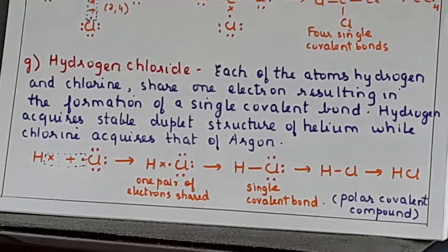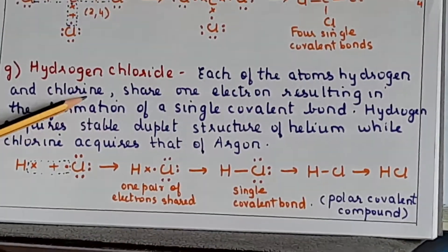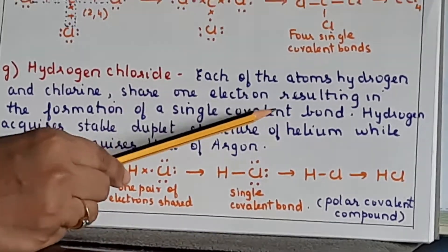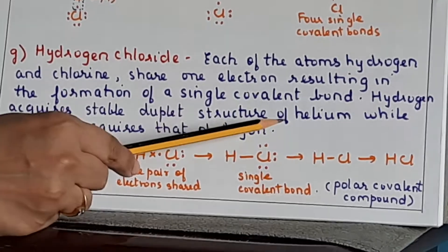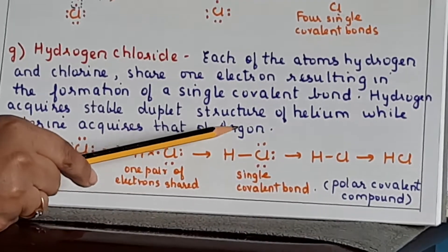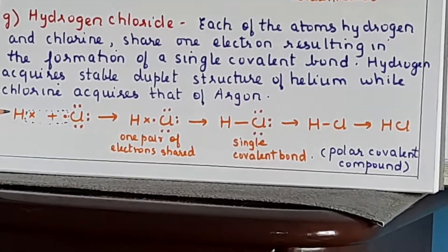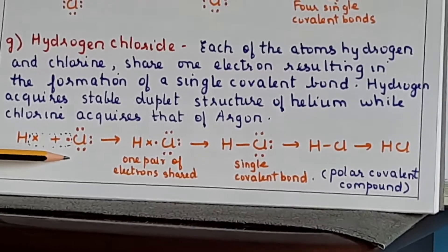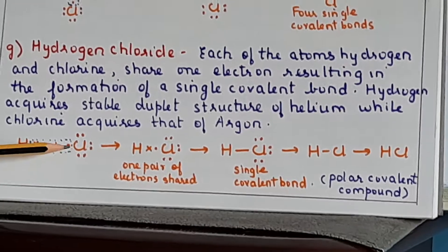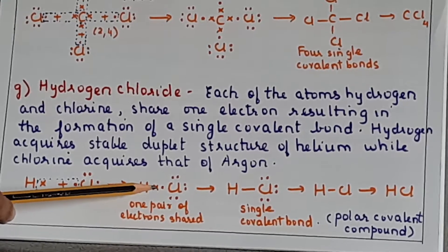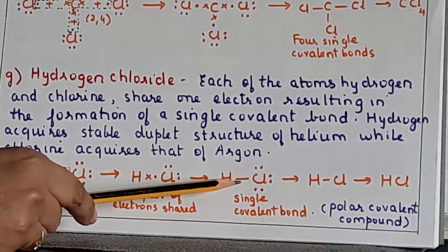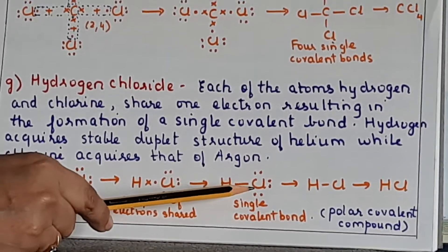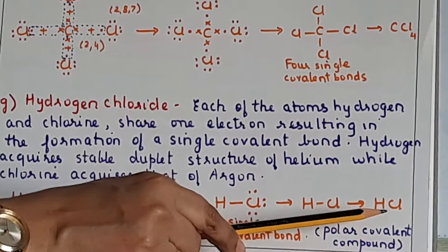For hydrogen chloride, each atom of hydrogen and chlorine shares one electron, resulting in the formation of a single covalent bond. Hydrogen acquires the stable duplet structure of helium while chlorine acquires that of argon (2,8,8). Show hydrogen's one electron with a cross and chlorine's seven valence electrons with dots, then show the overlap by dotted lines. One electron pair is shared between hydrogen and chlorine, forming a single covalent bond. The other electrons on chlorine are not involved in bonding. This is the HCl polar covalent molecule.